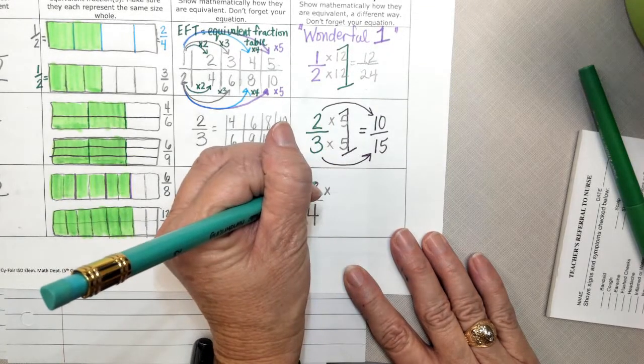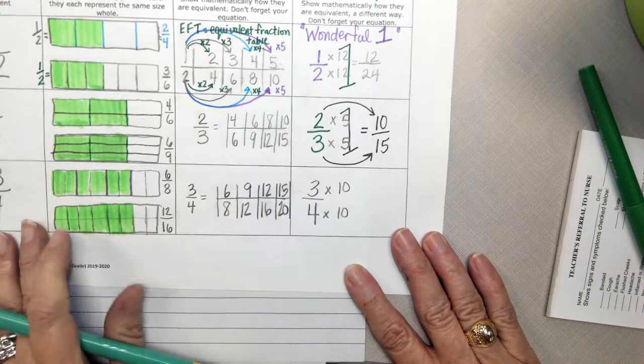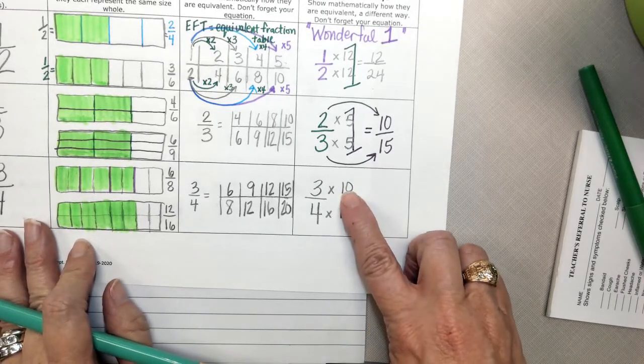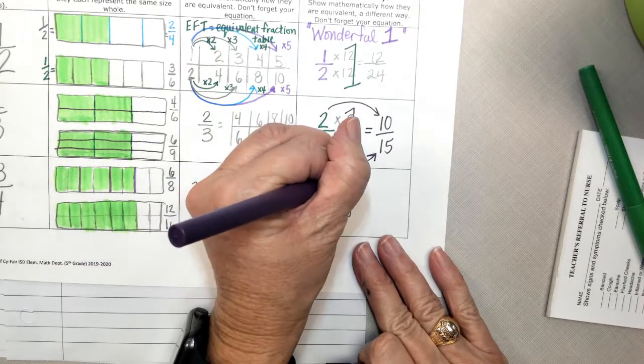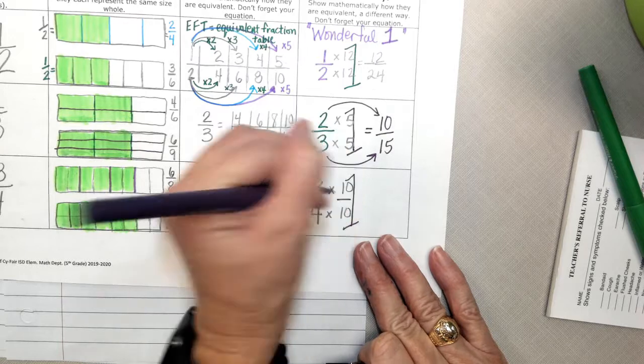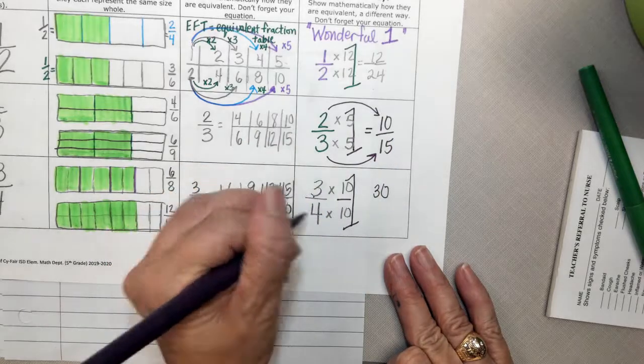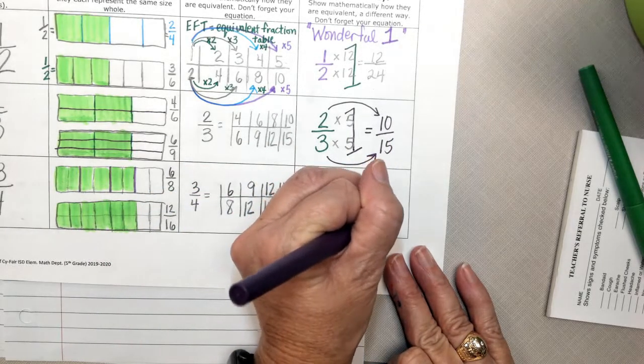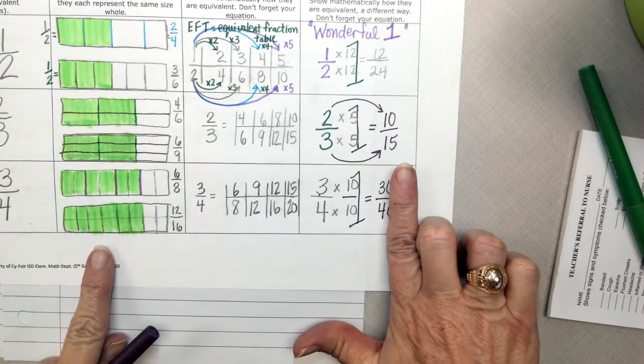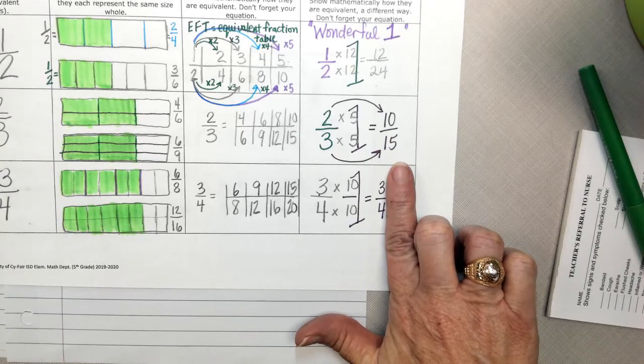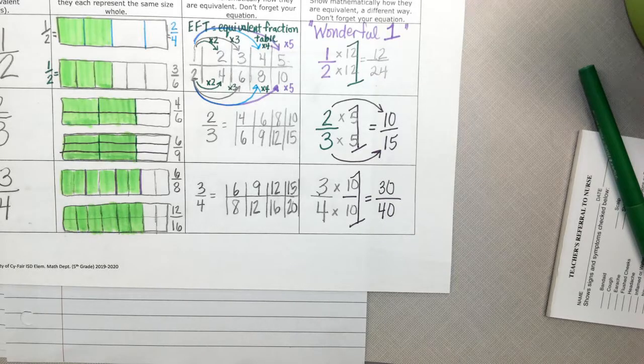If you multiply by the same number on the top and on the bottom, our 10 tenths is disguised as our friendly number 1. 3 times 10 is 30, and 4 times 10 is 40. Oh, looky there. And if I cover up the 0s, what fraction do I really have? 3 over 4. How do we add the same thing? Got it.